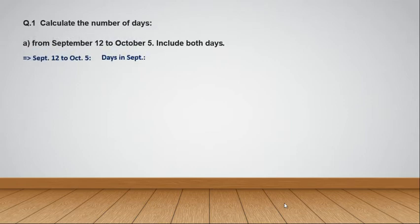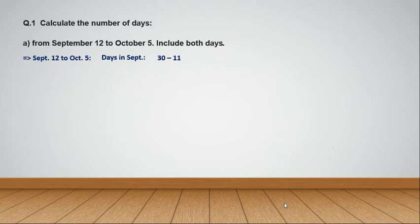Now let's check how many days are there in the month of September. In September there are 30 days. From those 30 days we need to subtract 11, because we need to start counting from the 12th of September. The previous days we need to subtract: 30 minus 11 equals 19.